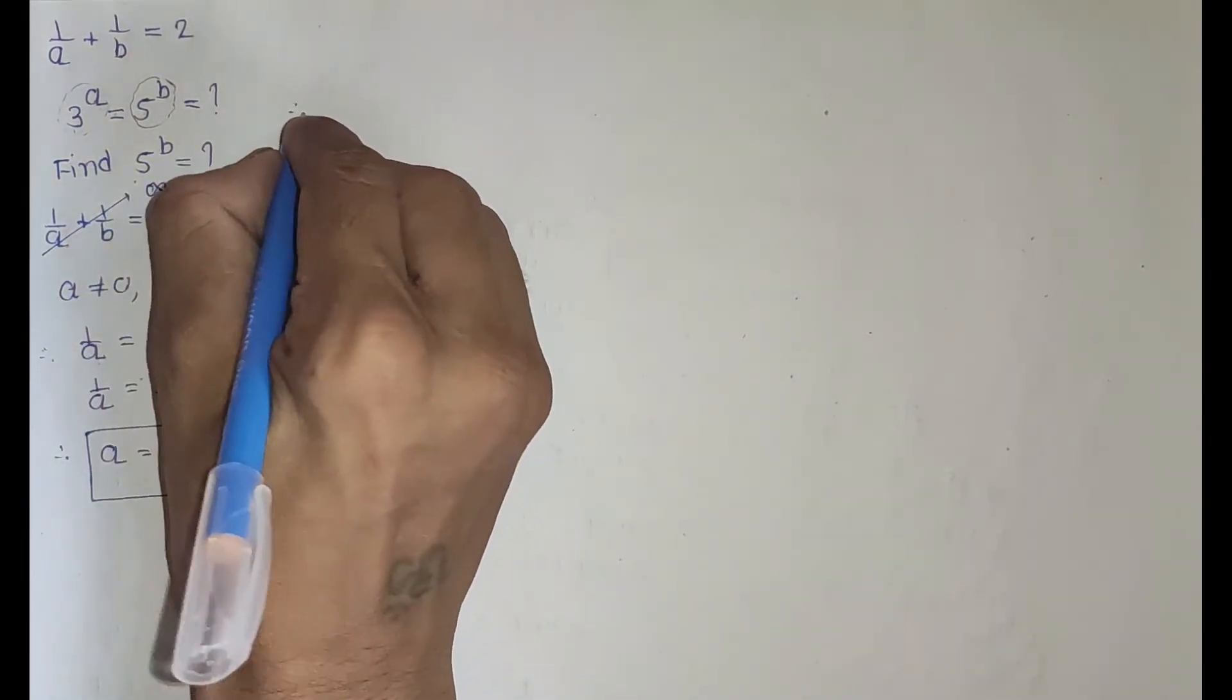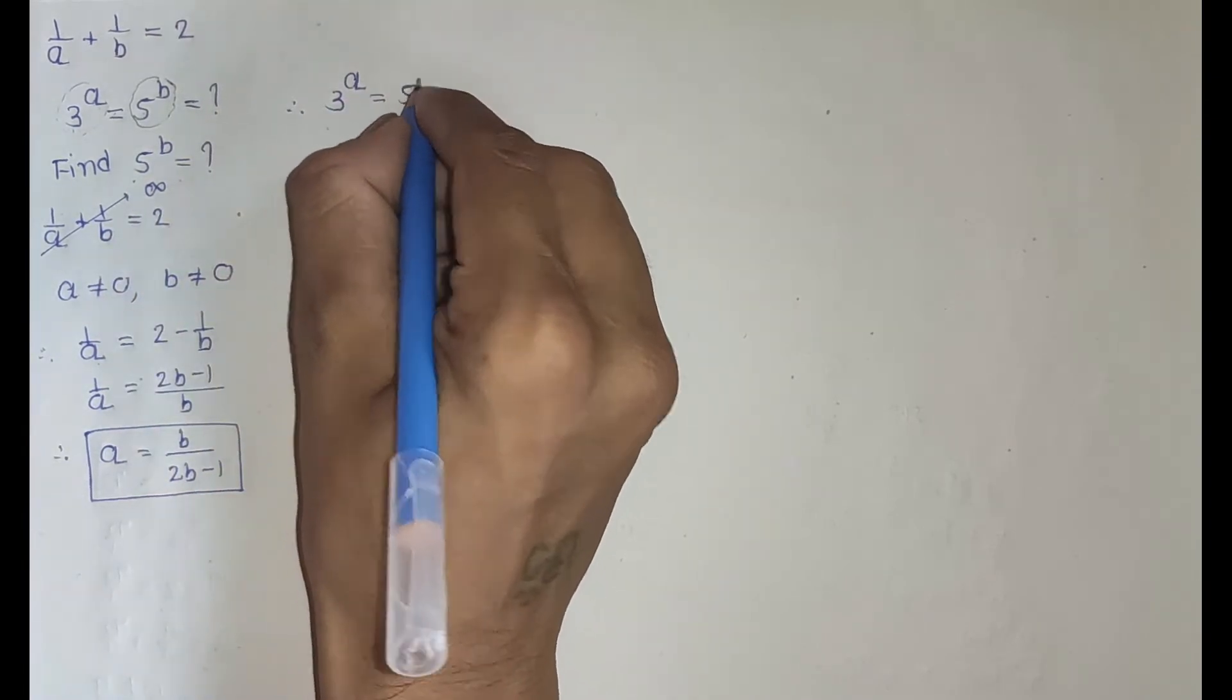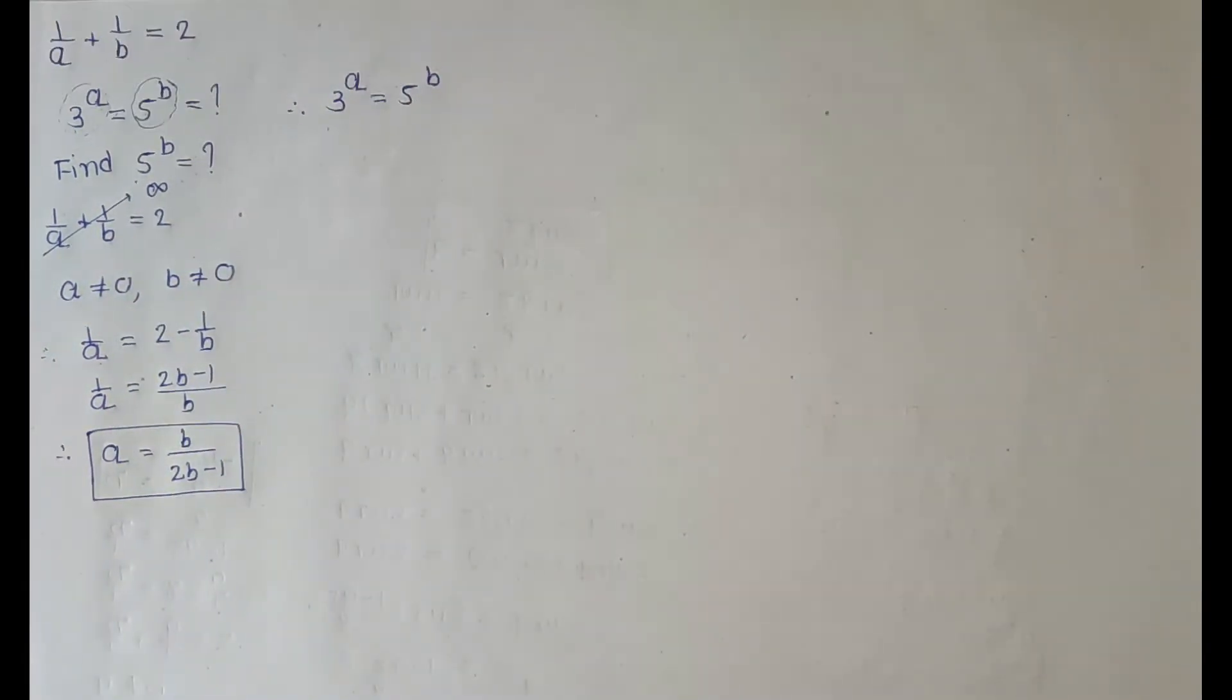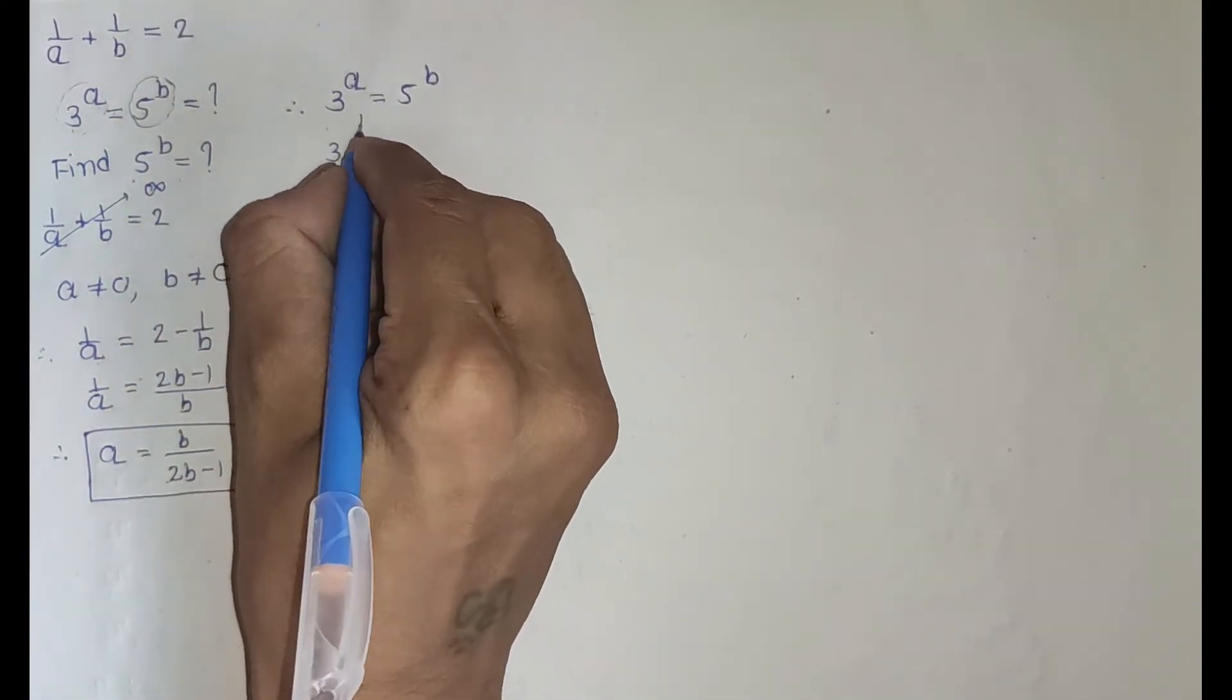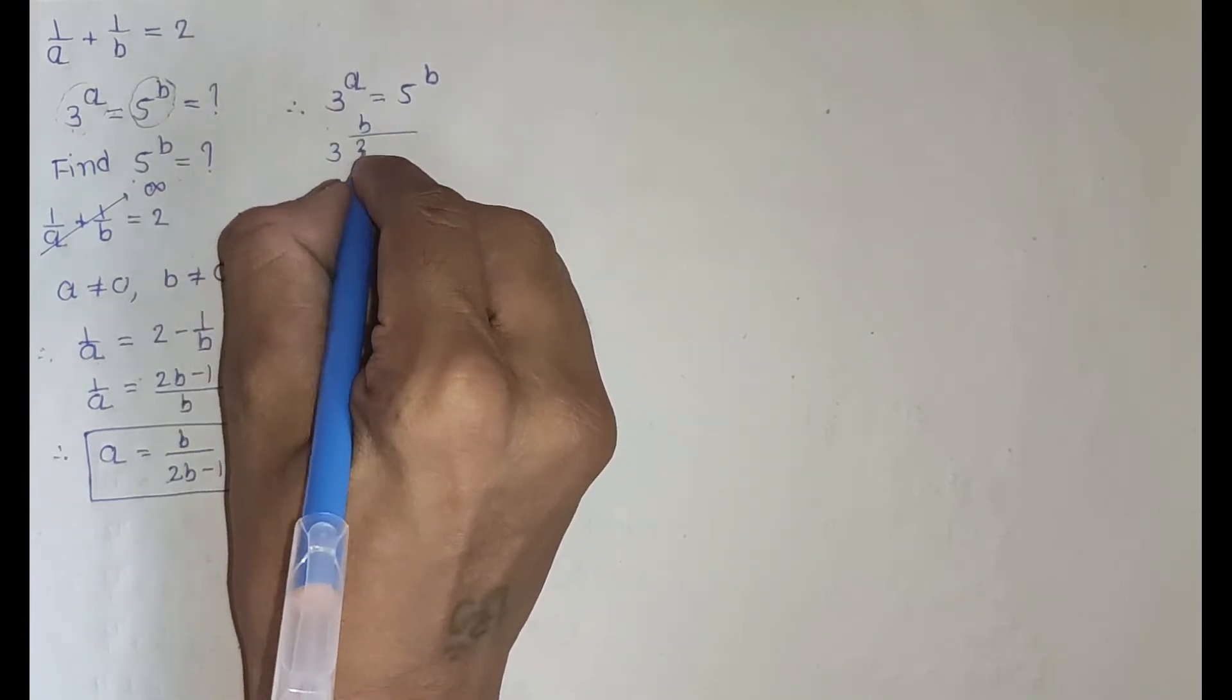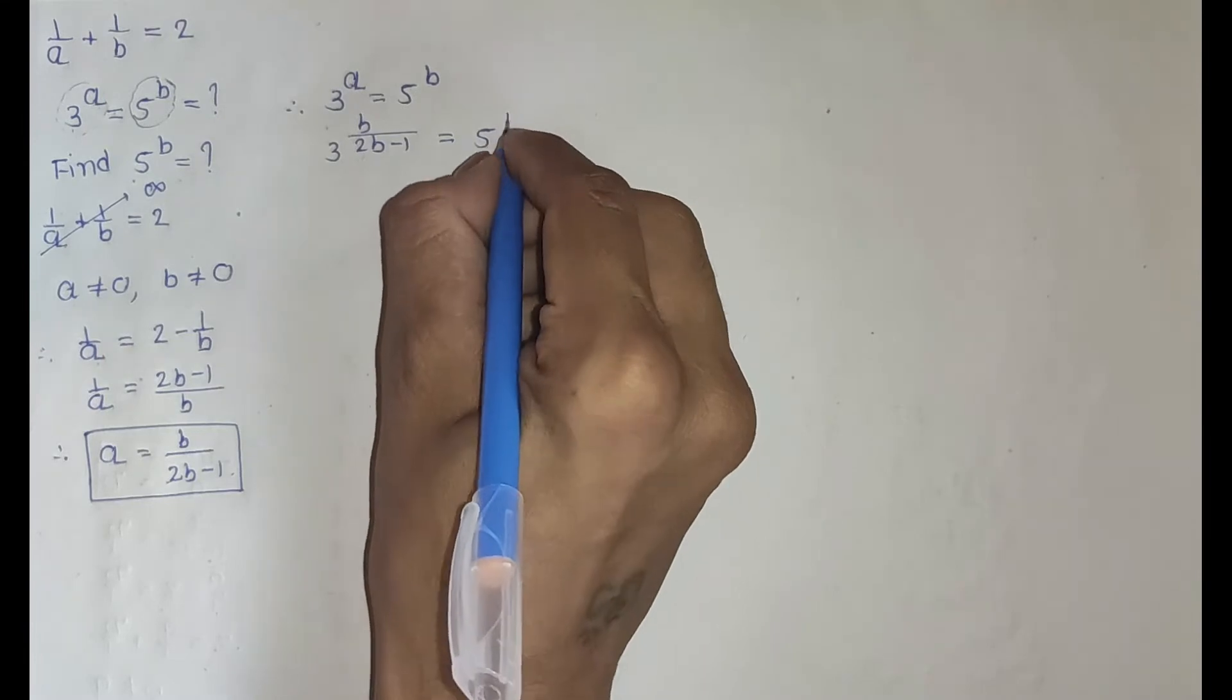Also we have 3 power a equal to 5 power b. Put a equal to b divided by 2b minus 1. 3 power b divided by 2b minus 1 equal to 5 power b.